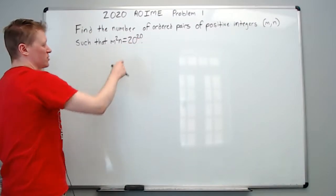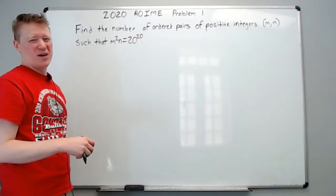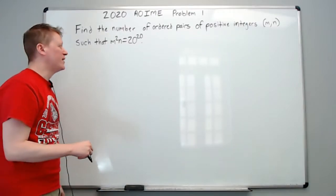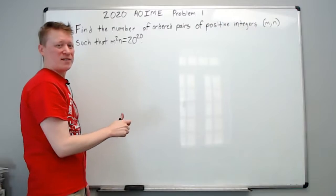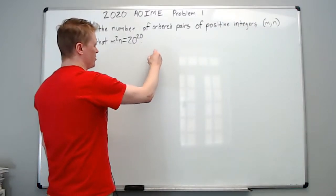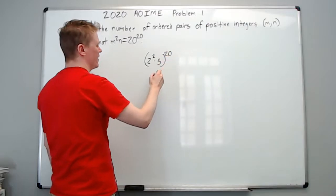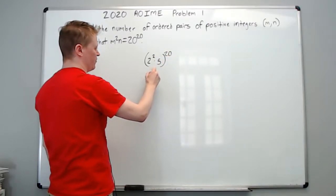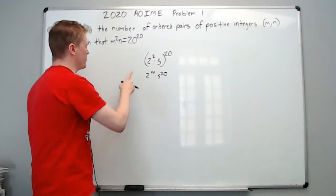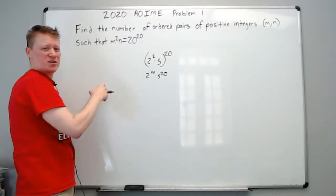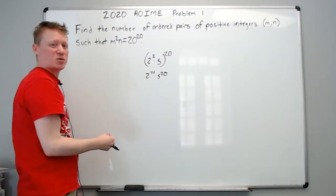Find the number of ordered pairs of positive integers m, n such that m squared times n equals 20 to the 20th. The n might feel like it's going to throw you off, but it's actually kind of irrelevant. We really just want to know how many perfect squares we can make out of 20 to the 20th. So we write 20 to the 20th as 2 squared times 5 to the 20th, which gives us 2 to the 40th times 5 to the 20th. However many perfect squares you get, that's going to make a unique value of n for each one.